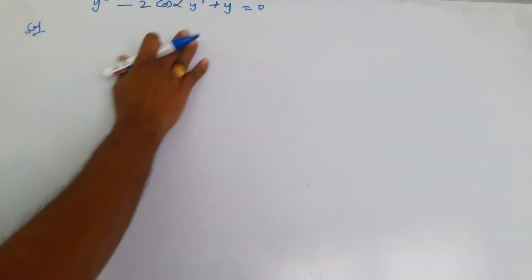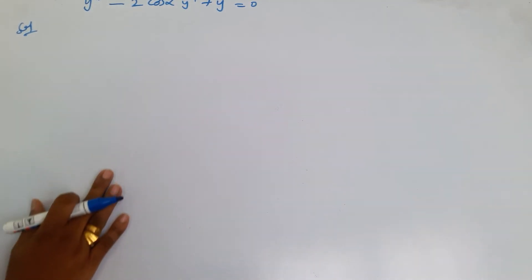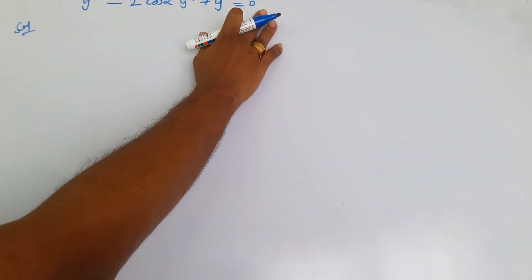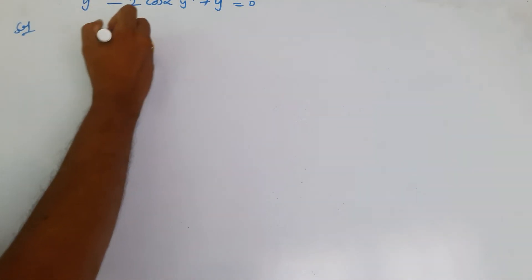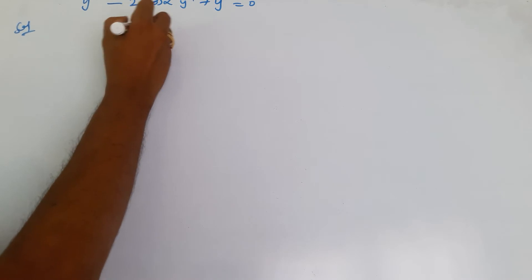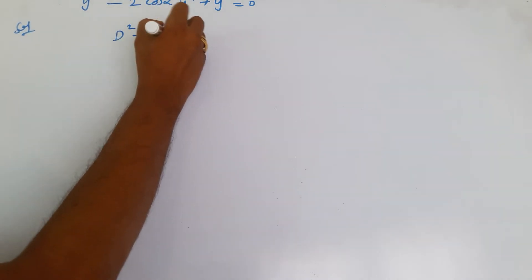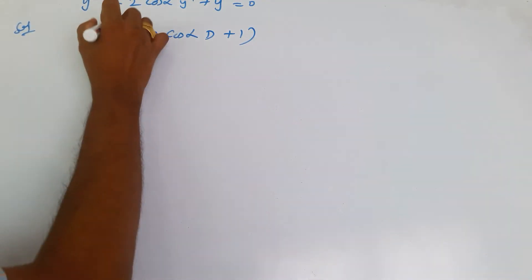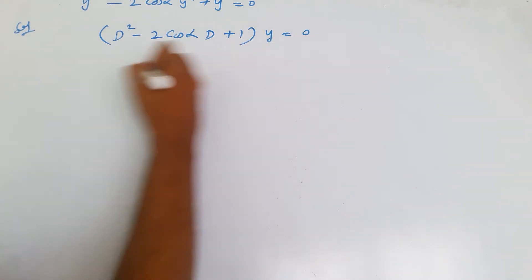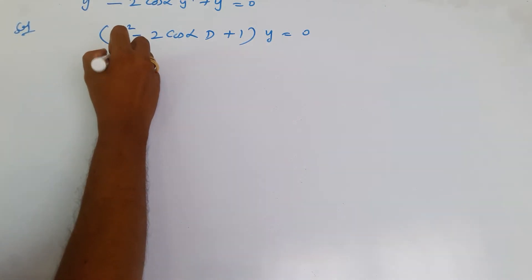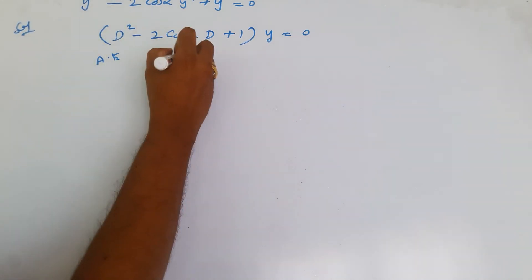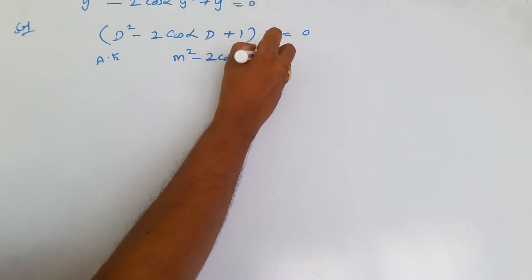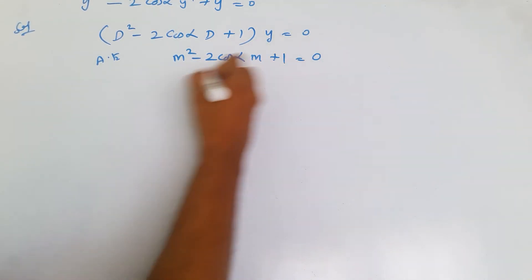Let us try to solve this differential equation. This is a second order differential equation and it is homogeneous. Let us write it in this form: (D² - 2·cos(α)·D + 1)y = 0. The auxiliary equation corresponding to this is m² - 2·cos(α)·m + 1 = 0.